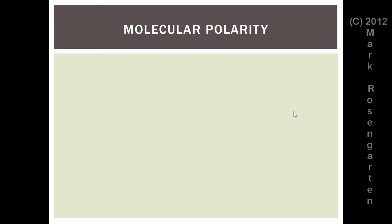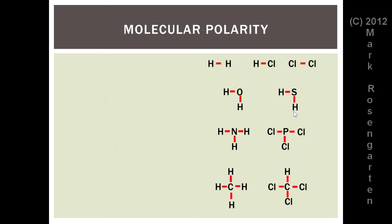The strength of attractive force has to do with the polarity of the molecule, which is related to the molecule's shape. To figure out the polarity of the molecule — to see whether the molecule will act like a magnet — determine the lines of symmetry that the molecule has. In other words, how many ways can you slice it so that it's a mirror image on both sides?